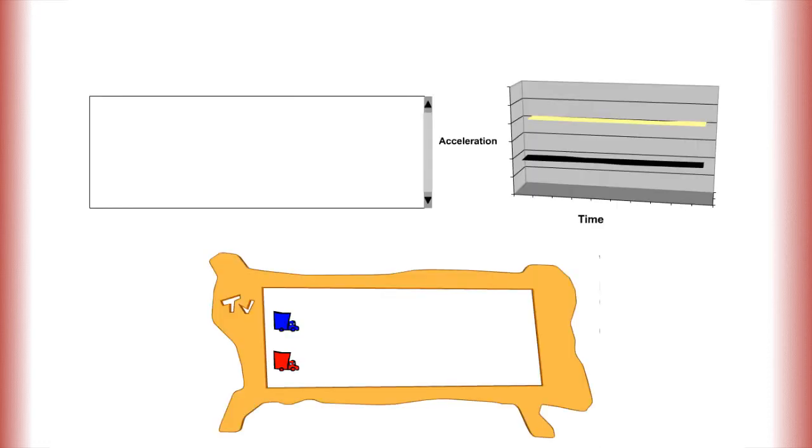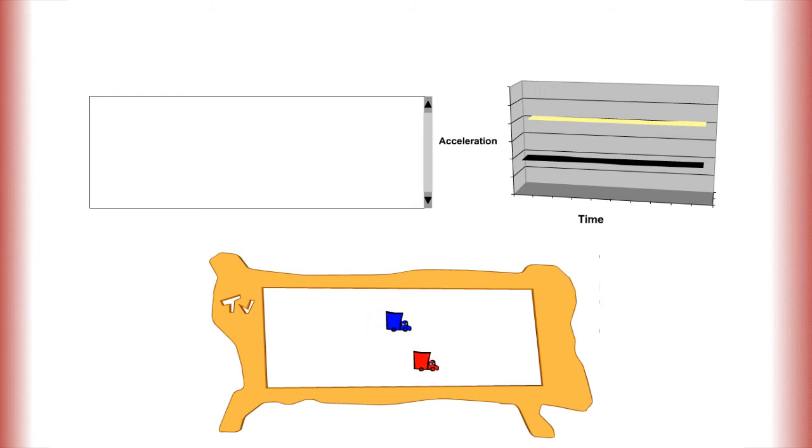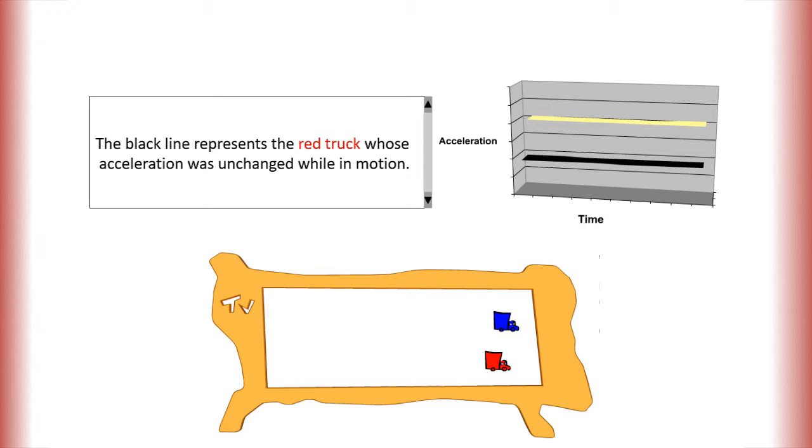Based on the graph below, which line represents the blue truck and which line represents the red truck? The yellow line represents the blue truck because the acceleration was slower at the start and faster at the end. The black line represents the red truck, whose acceleration was unchanged while in motion.